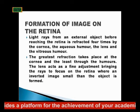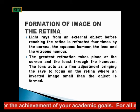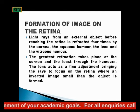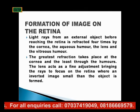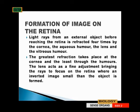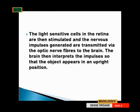How does an image form on the retina? Light rays from an external object, before reaching the retina, are refracted four times: by the cornea, the aqueous humour, the lens, and the vitreous humour. The greater refraction takes place in the cornea, and the least in the humours. The lens acts as a fine adjustment that brings the rays to focus on the retina, forming an inverted image smaller than the object. The light-sensitive cells in the retina are stimulated and nervous impulses are transmitted via the optic nerve fibers to the brain.